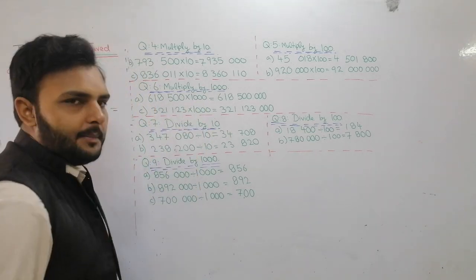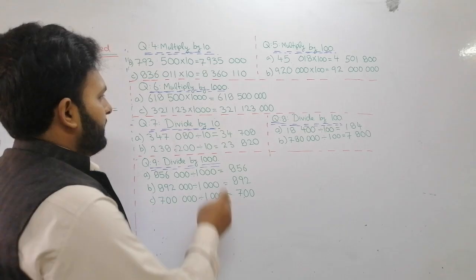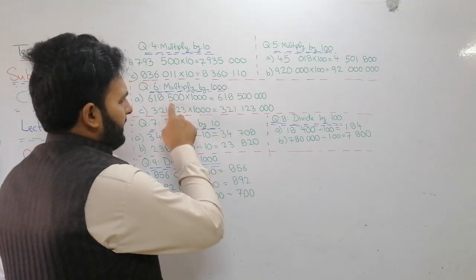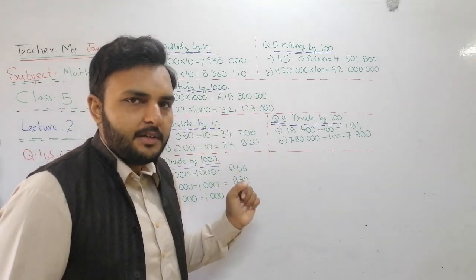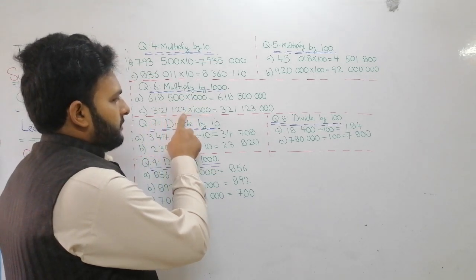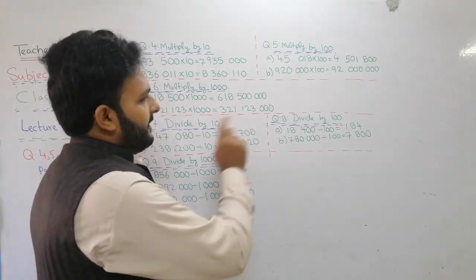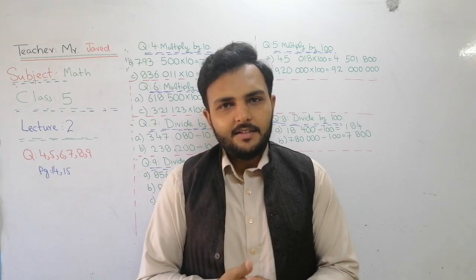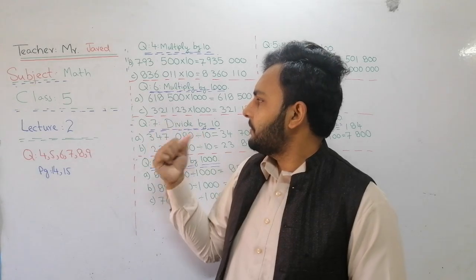Question number 6 — multiply by 1000. How do we multiply by 1000? There are already two zeros in the number, so now there will be 3 more, making it 5 total. For example: 6, 1, 8, 5, 1, 0 and three zeros at the end. For part C, you will solve by yourself — 3, 2, 1, 1, 2, 3. When we multiply by 1000, there are three zeros in 1000, so we write three zeros at the end.